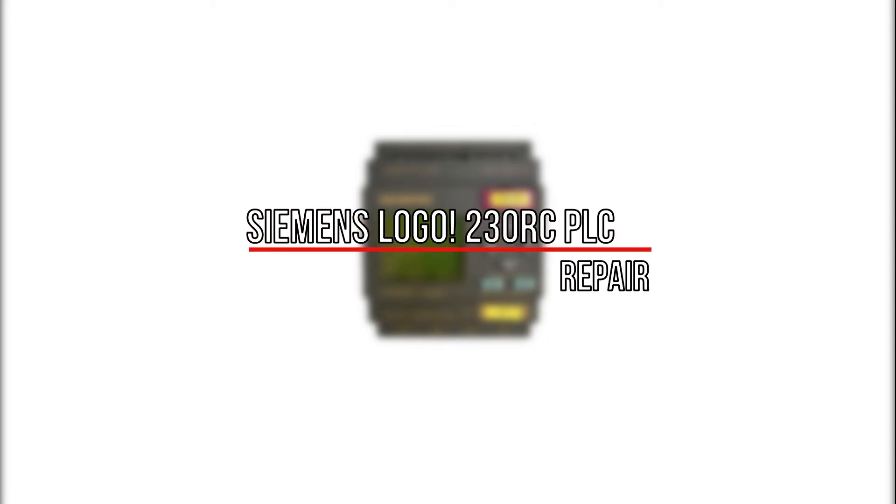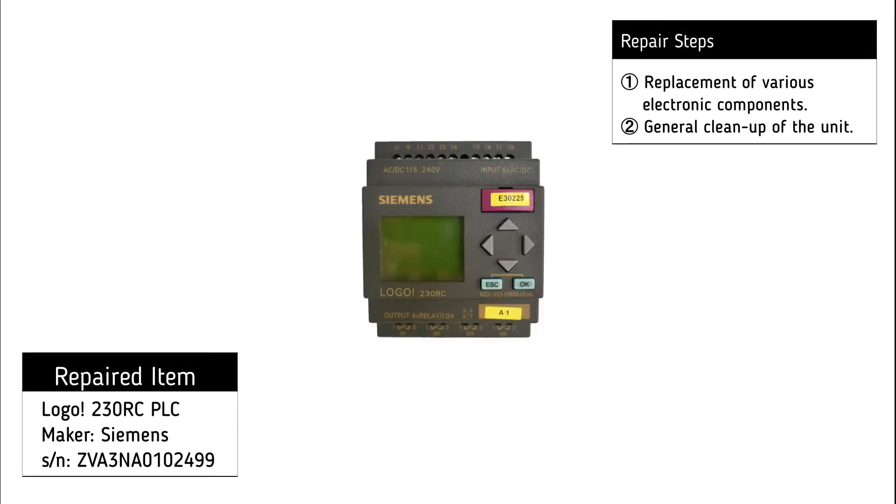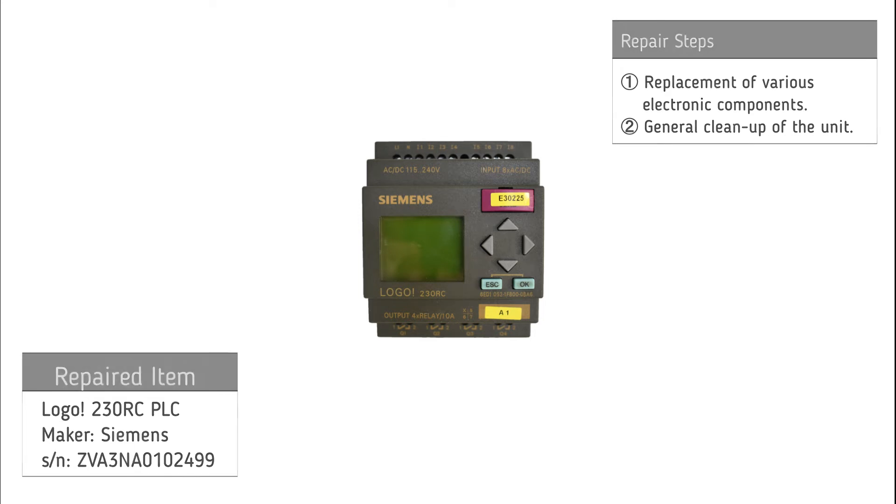For the repair of the Siemens Logo 230RC PLC, the following procedures were necessary: Replacement of various electronic components and general cleanup of the unit.